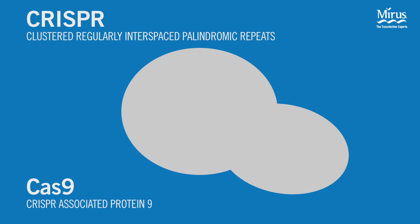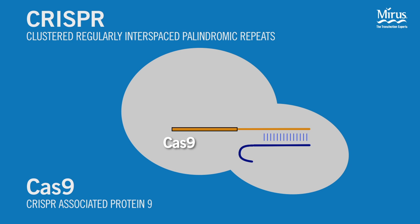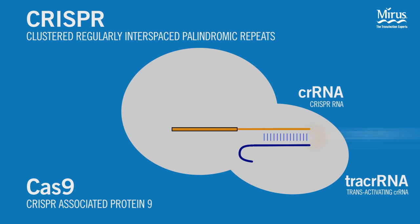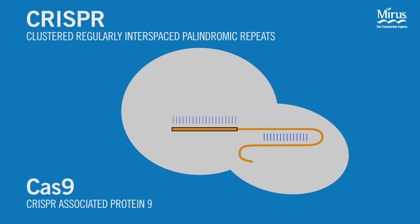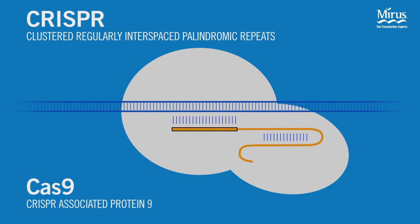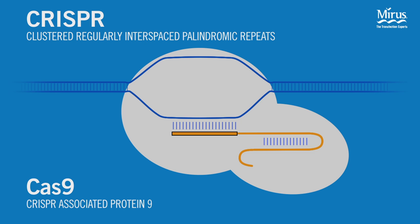The CRISPR-Cas9 system consists of the Cas9 endonuclease and a guide RNA. The guide RNA can be supplied as a two-part complex consisting of CRISPR-RNA and tracer RNA, or as a single chimeric oligonucleotide. Using the sequence provided in the guide RNA, the Cas9 complex binds to the specified target in the genome. After the complex is bound to a matching sequence, Cas9 unwinds the target DNA and cleaves the target on both strands.